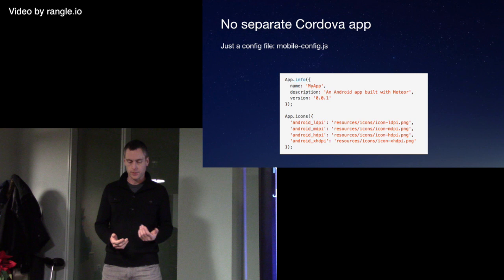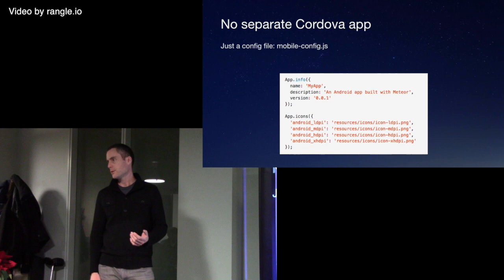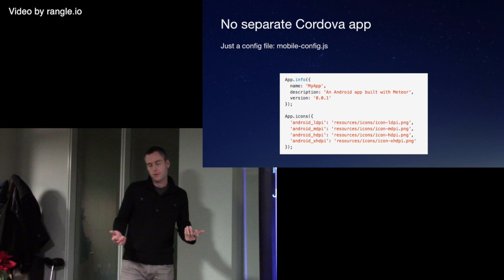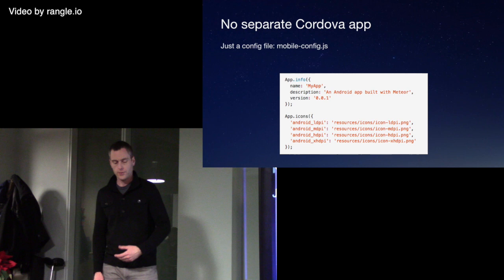There's no separate Cordova app to worry about. This is a really nice thing in development — you've just got your Meteor app, there's a config file that you add, and as you get more advanced you can customize more and more things. You can start putting in files that will replace some of your Cordova config. You can do splash screens, run screens, icon files, and all kinds of stuff.